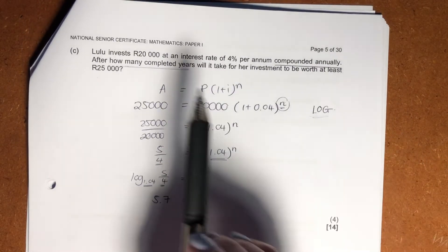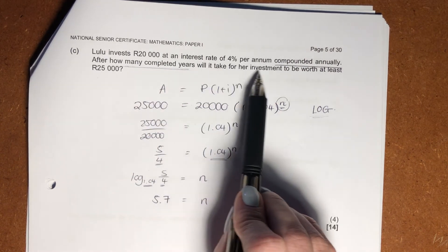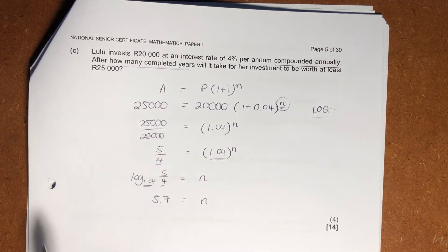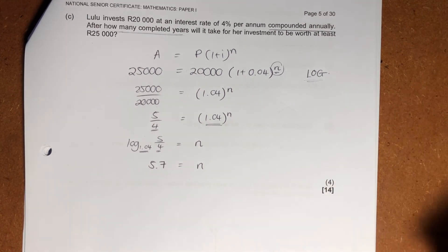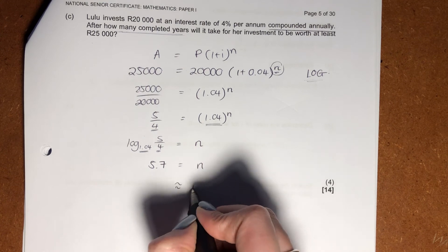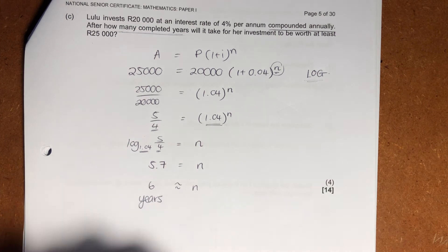But again, what did the question say? How many completed years? Will it take for her investment to be worth at least 25,000 rand? 5.7 is not a completed number. But we know that when n equals six years, it is a completed year, and she would have had over 25,000 rand.